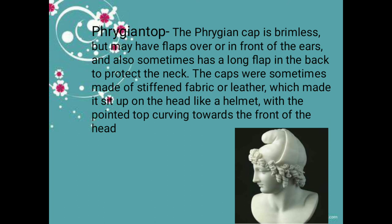The sphendone is a bandage-shaped fillet worn snugly around the head — it can be made as a ribbon band or a metal band, used to keep the hair in place. The nimbus is a linen band with gold embroidery, ornamented. The Phrygian cap is brimless but may have flaps over the ears; sometimes it has a long flap in the back. Caps were sometimes made of stiffened fabric, sitting up on the head like a helmet with a pointed top.